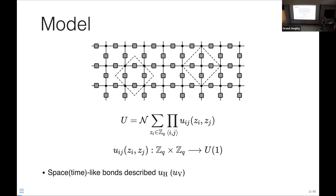Imagine we have a partition function on a square lattice, where between each site, or on every bond, we have a factor u sub ij, which is a map from Z_q times Z_q to the phases U(1). We have two kinds of bonds, vertical and horizontal, and two kinds of functions, u_h and u_v, which appear on the horizontal and vertical bonds respectively. By summing over q on each of the lattice sites, we have a partition function of some statistical mechanical clock-like or q-state model.